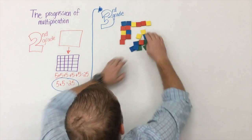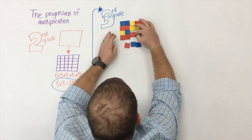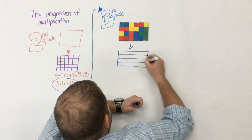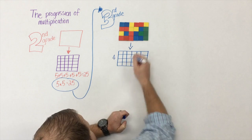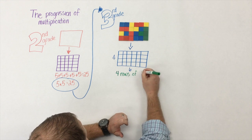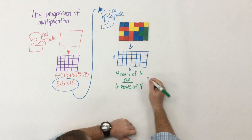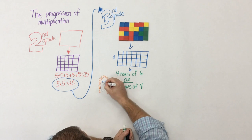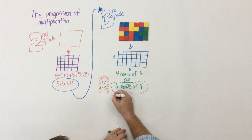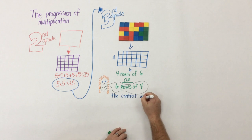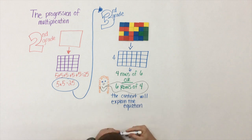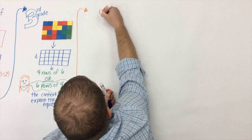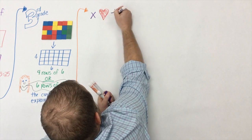Then in third grade, students take the understanding they've begun to develop in second grade and begin to construct arrays using square color tiles or any manipulative. The important piece is that once they've actually constructed that model, they draw a pictorial representation which matches their model. Here we have four rows of six, or it could also be seen as six rows of four. The big piece is that we don't push an understanding on students — we let students explain what their model represents. The context will explain the equation, not the teacher.